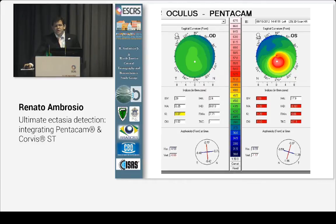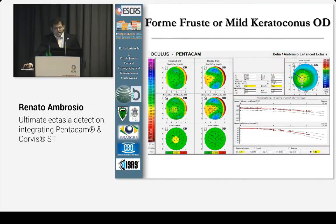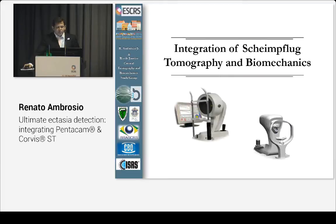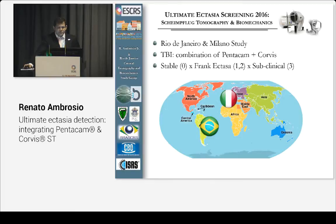Some of these cases are truly unilateral cases of ectasia, but we need to achieve better sensitivity in some of them. If you just use the D value, you have about 80% sensitivity for those fellow eyes. The integration of Scheimpflug tomography and biomechanics is definitely what we think is the future — and actually the current present — for ultimate screening. I'm very glad to have done this study with the Vinciguerra family. The TBI is the combination of Pentacam and Corvis.